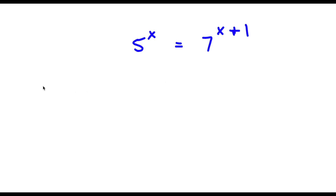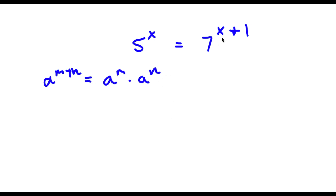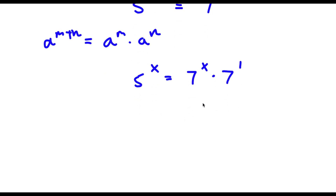Now if I have something in the form a to the power of m plus n, this is equal to a to the power of m times a to the power of n. So 7 to the power of x plus 1 is going to equal 7 to the power of x times 7 to the power of 1.